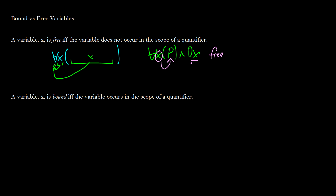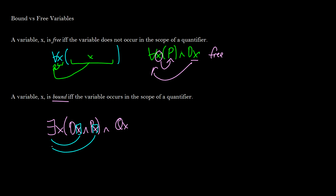So a variable is bound if it occurs in the scope of a quantifier. If we have 'there exists an x' and we have Dx and Px, and something after that which is Qx — which ones are bound? These two x's are bound because they're in the scope of the existential quantifier, since the main brackets for the existential contain those x's. However, the x beside Q is free because it is not contained within the brackets.